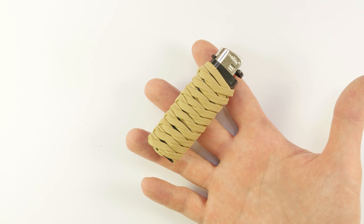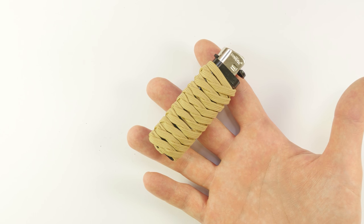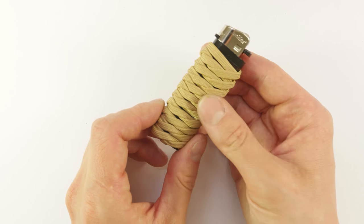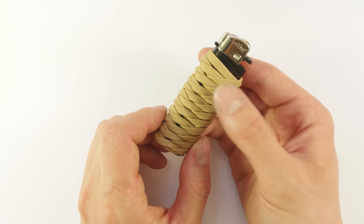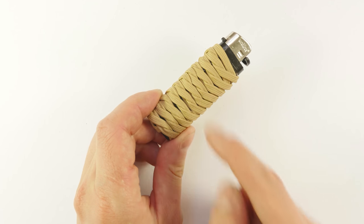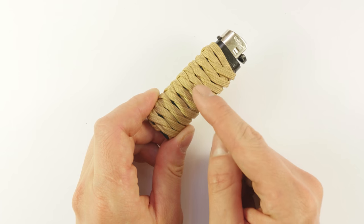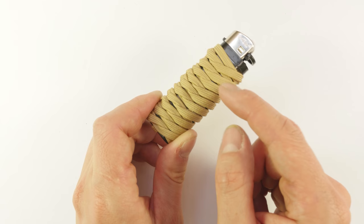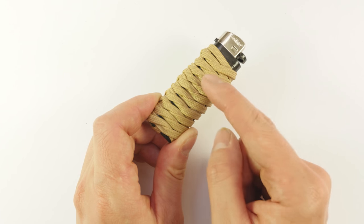Before we start tying our wrap, let me give you a little tip. If your wrap is not done very tightly, it may be prone to slipping. So if you're not going to tie it very tightly, you may want to either duct tape or wax the lighter a bit in order to create some friction between the cord and the lighter.